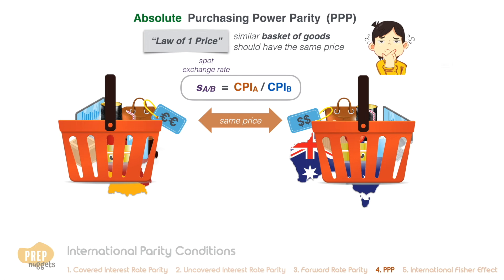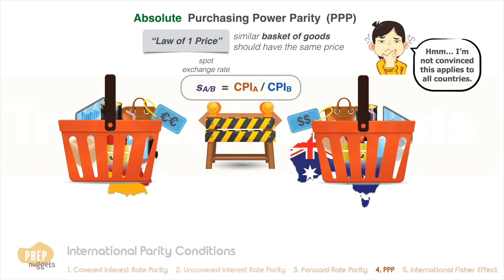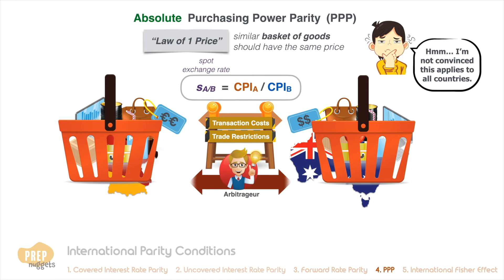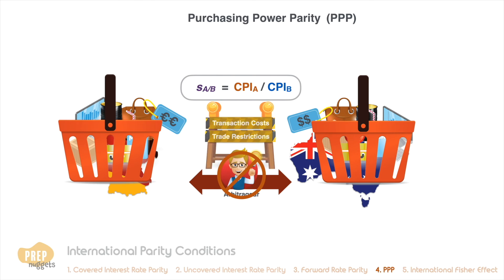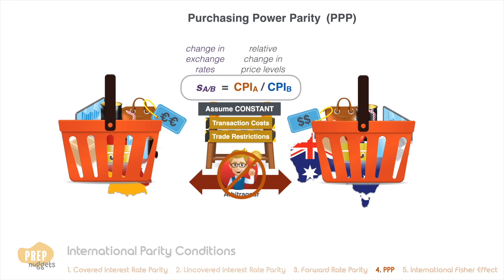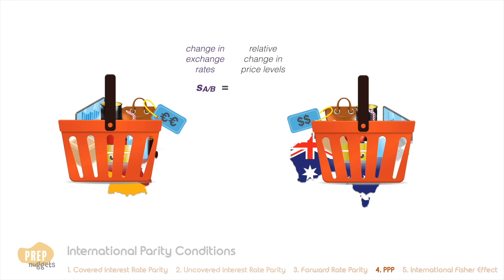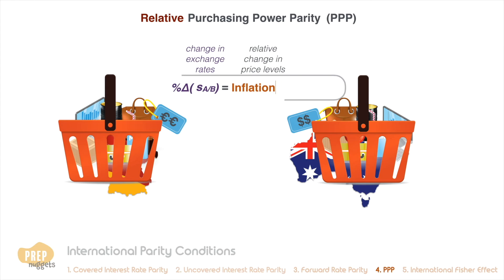However, this relationship may not hold in the real world as transaction costs and trade restrictions prevent arbitrage from taking place. But if we assume that transaction costs and trade restrictions remain constant over time, the change in exchange rates can therefore equal the relative change in price levels of the two countries. We call this relative PPP — more specifically, the percentage change in exchange rates is the difference in the inflation rate between the foreign country and the domestic country.